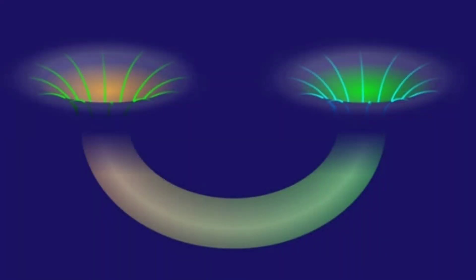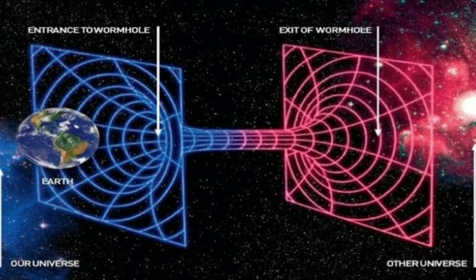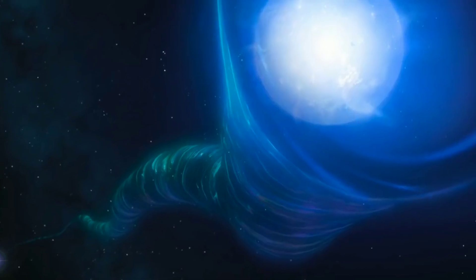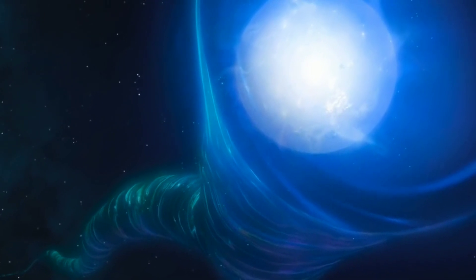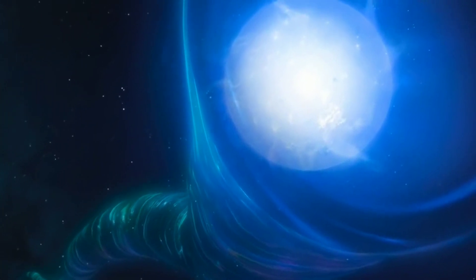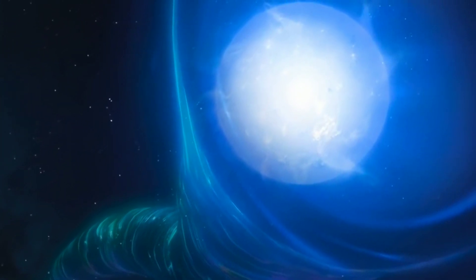Wormholes contain two mouths, with a throat connecting the two. The mouths would most likely be spheroidal. The throat might be a straight stretch, but it could also wind around, taking a longer path than a more conventional route might require.